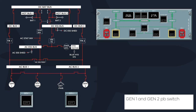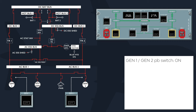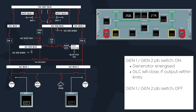The generator 1 and generator 2 push button switches, located on the overhead ELEC control panel, control the engine-driven generators, their respective GCUs, and generator line contactors. When the push button switch is in the normal on, lights-out position, the generator is energized, and if the electrical output is within limits, the generator line contactor will close. With the push button switch selected off, the generator field is de-energized and the generator line contactor opens. Any time a generator push button switch is selected off, the fault circuit is reset.